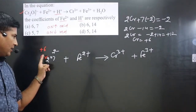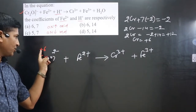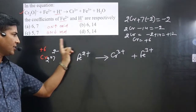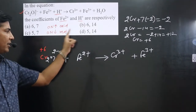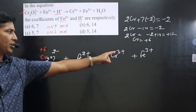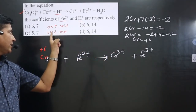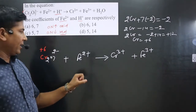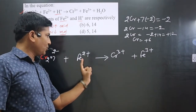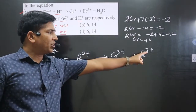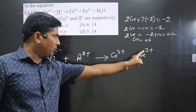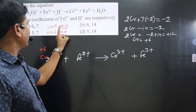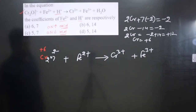Comparing oxidation numbers: Cr goes from +6 on the left to +3 on the right — that's a decrease, so it's a reduction reaction. For iron, it goes from +2 on the left to +3 on the right — that's an increase, so it's an oxidation reaction.